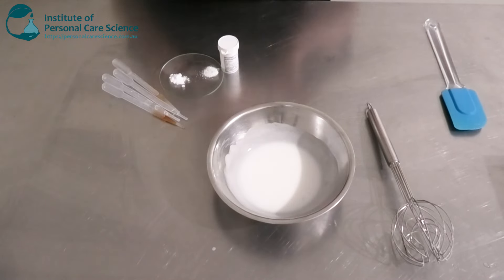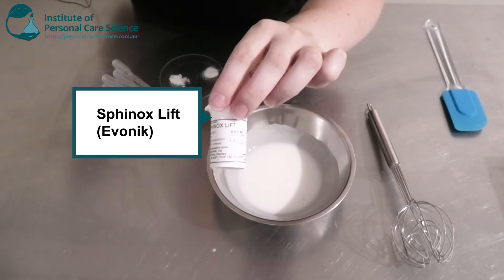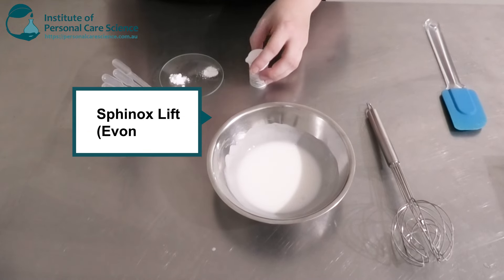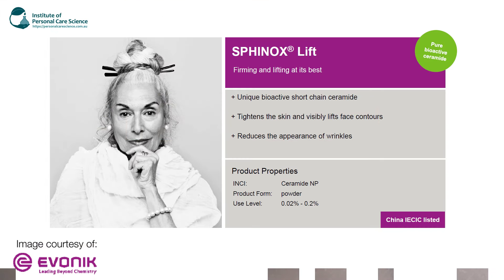Okay so once that's cooled now we're going to go ahead and add in our heat sensitive materials. So firstly I've got my active here. So this is the Sphinox Lift by Evernik. Now I'm just pulling up the efficacy data on screen here. So this is made from Ceramide NP and it's in a powder form. So it's got a unique bioactive short chain Ceramide that they've used to help tighten the skin and visibly lift face contours and also reduce the appearance of wrinkles.